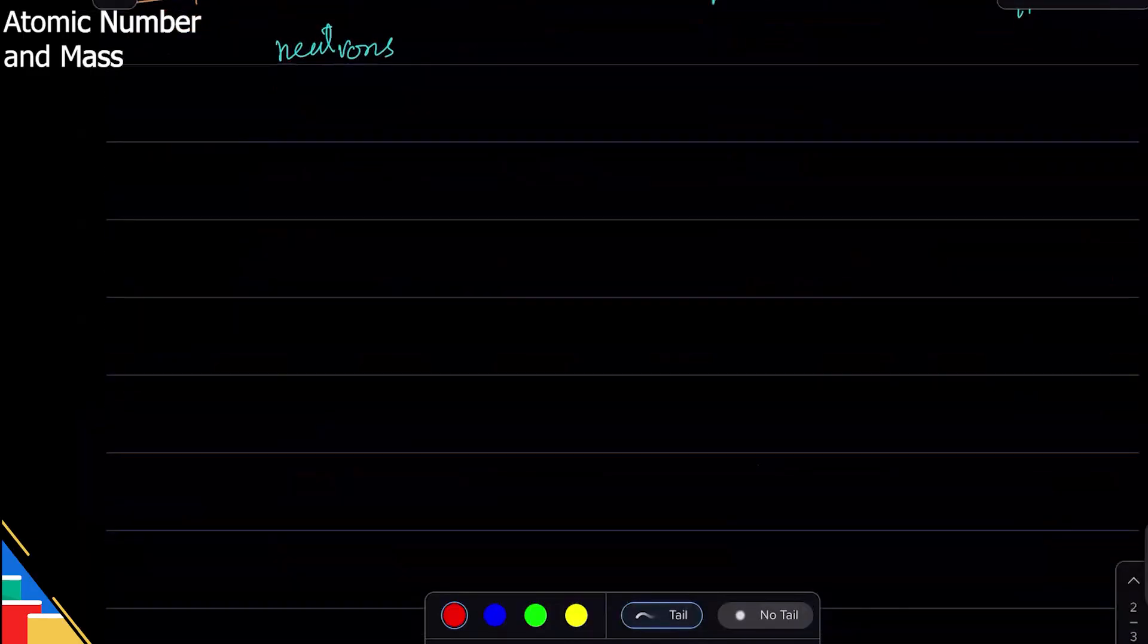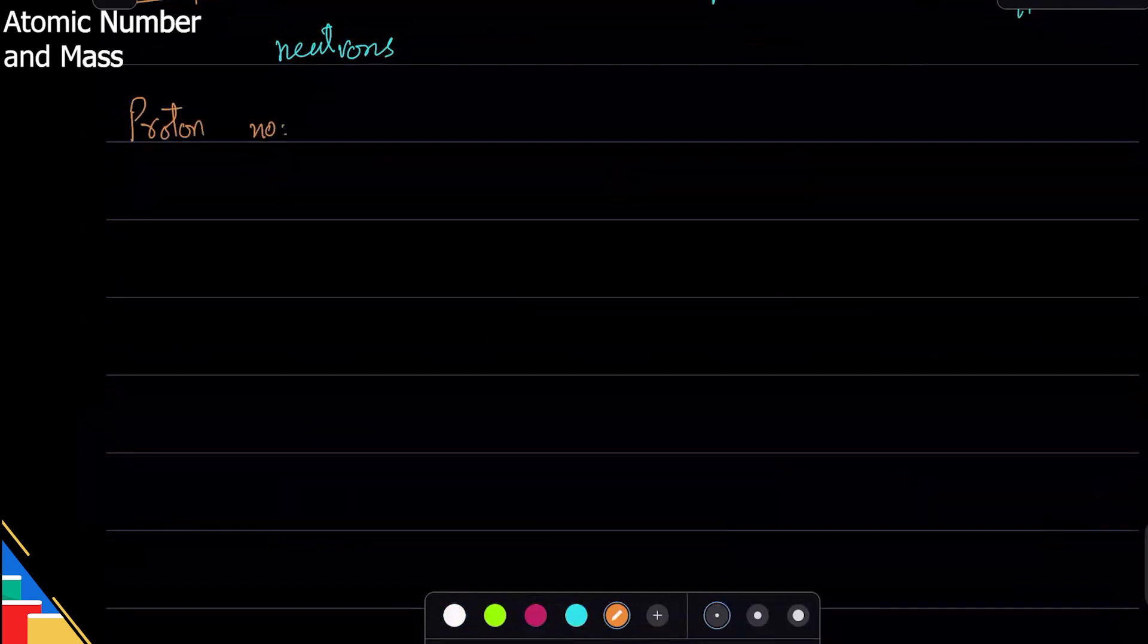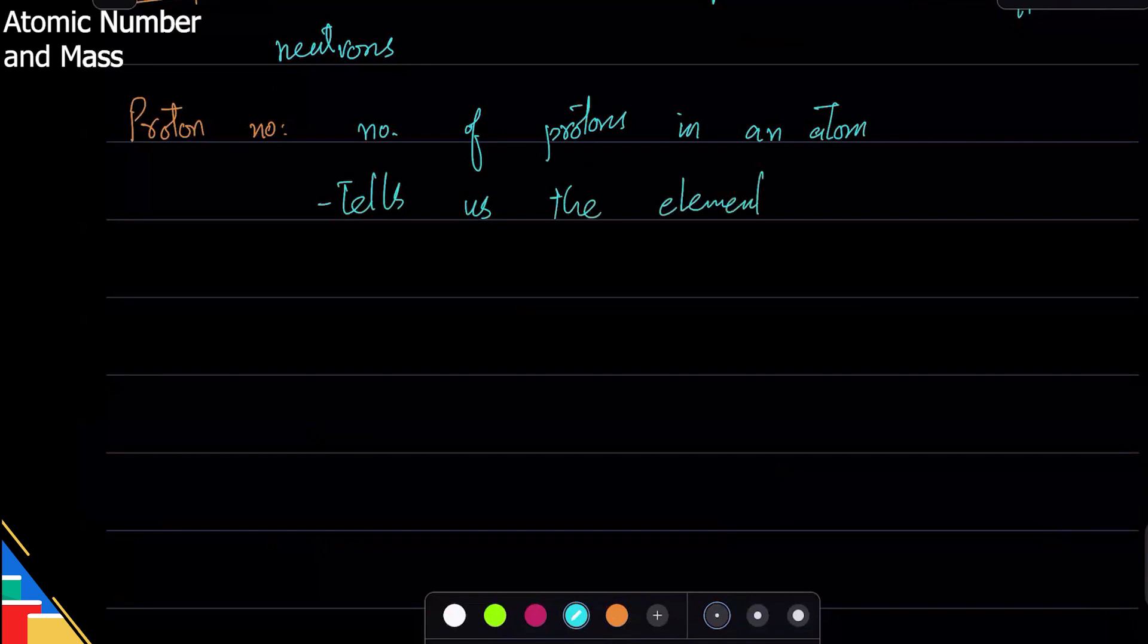Now we are going to look at a couple of other definitions, important things like proton number. This is perhaps the easiest definition: it is the number of protons in an atom. That's it. And why is this important? Because it tells us the element. It identifies what element you have. So any atom, if you want to know what element it is, look at its proton number.